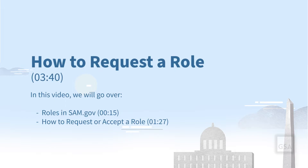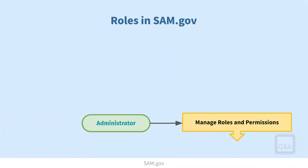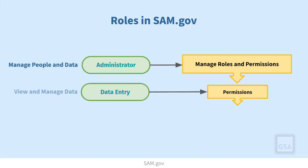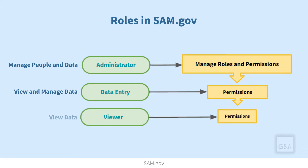In this video, you will learn about roles in SAM.gov and how you can request or accept a role. In SAM.gov, roles are sets of privileges or permissions that are assigned to user accounts, and they allow you to access certain types of data and to perform certain tasks. Roles are granted by administrators of an organization in SAM.gov and not by GSA.